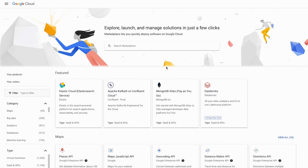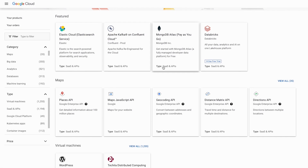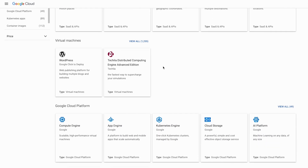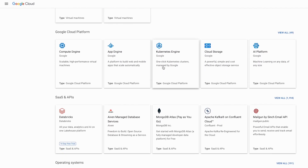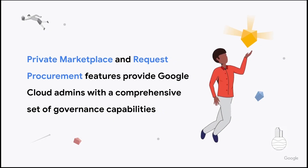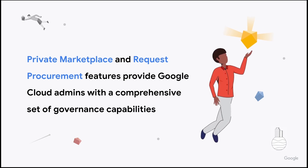Given this great selection of software and tools, many cloud administrators want controls that minimize non-compliant product usage without hindering their team's agility. Luckily, Google Cloud Marketplace has Private Marketplace and Request Procurement Governance features to help admins maintain compliance and honor their organization's governance framework and procurement processes.